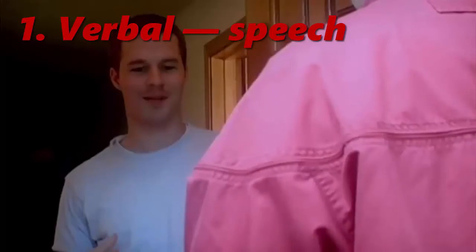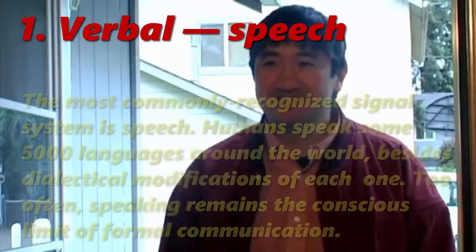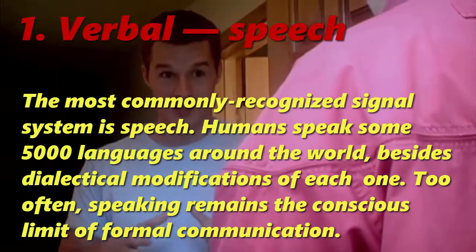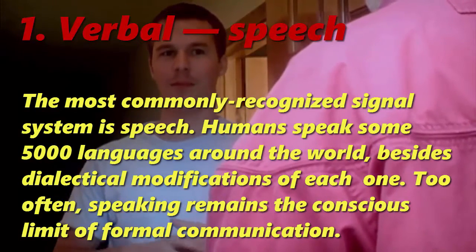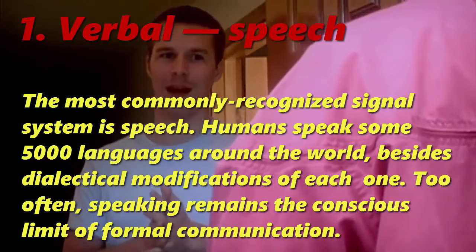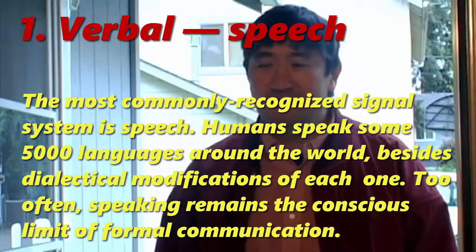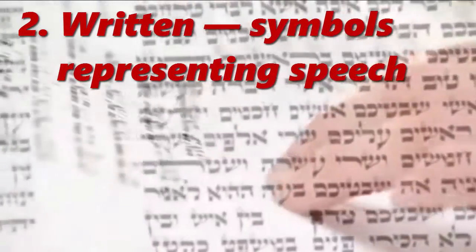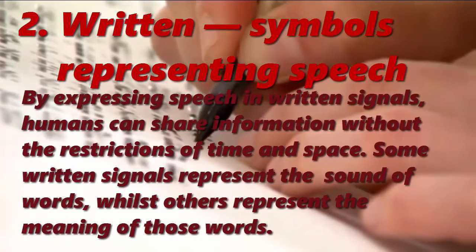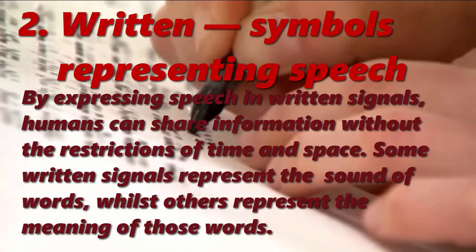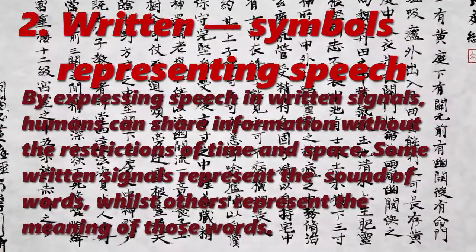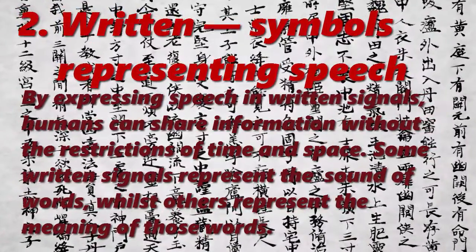1. Verbal, Speech. The most commonly recognized signal system is speech. Humans speak some 5,000 languages around the world, besides dialectical modifications of each one. Too often, speaking remains the conscious limit of formal communication. 2. Written, Symbols Representing Speech. By expressing speech in written signals, humans can share information without the restrictions of time and space. Some written signals represent the sound of words, whilst others represent the meaning of those words.